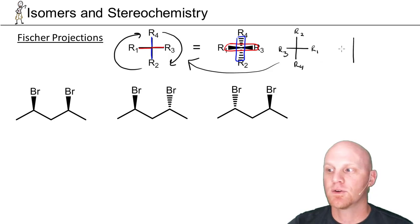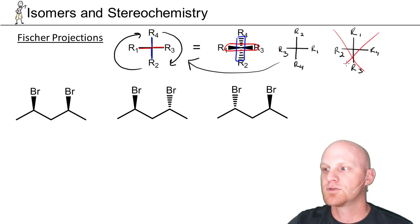But you're not allowed to rotate it 90 degrees. So if we started with R1 here, and then R4 here, and then R3 here, and R2 here, this is not equivalent to any of the two structures we've drawn. You're not allowed to just rotate it 90 degrees.